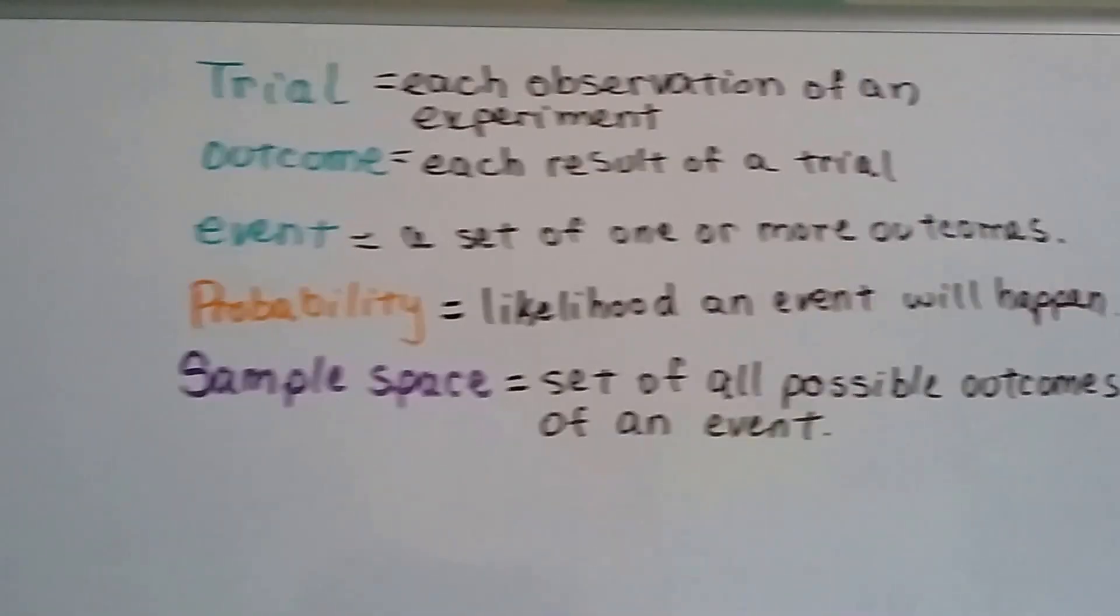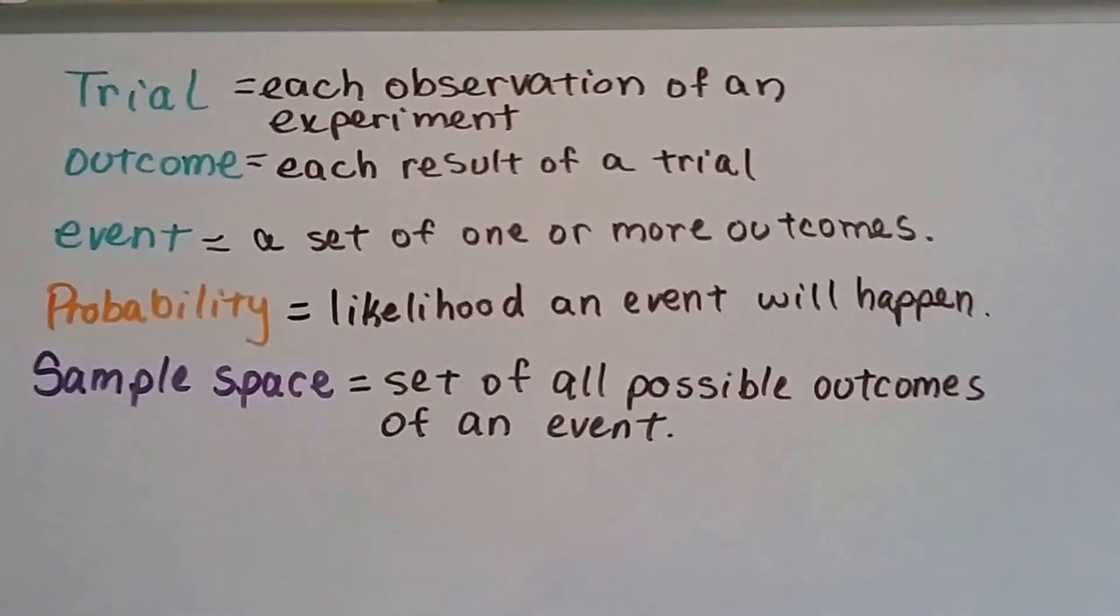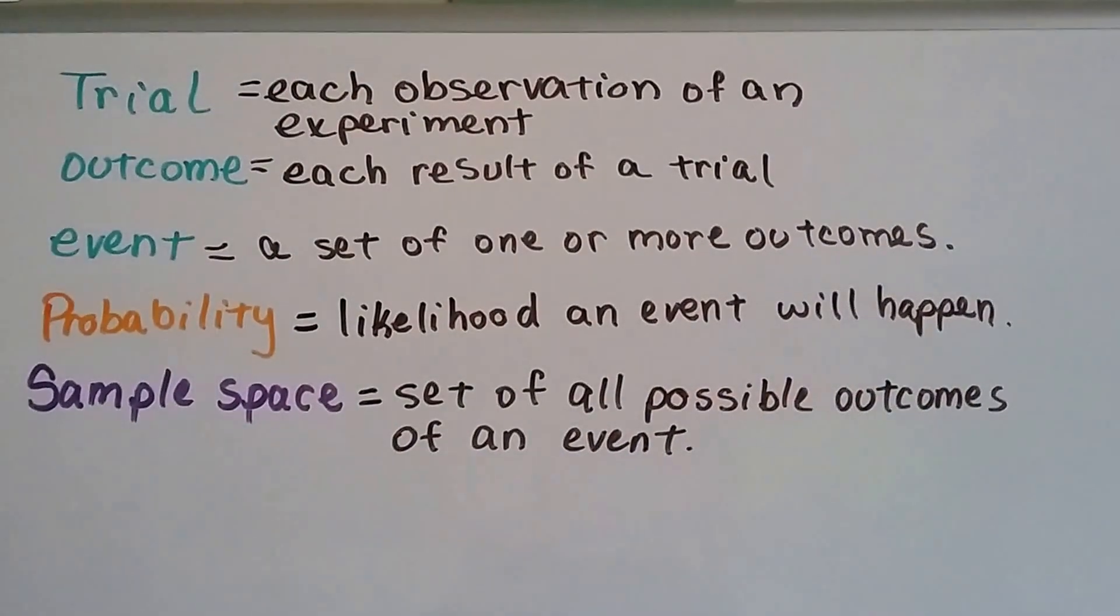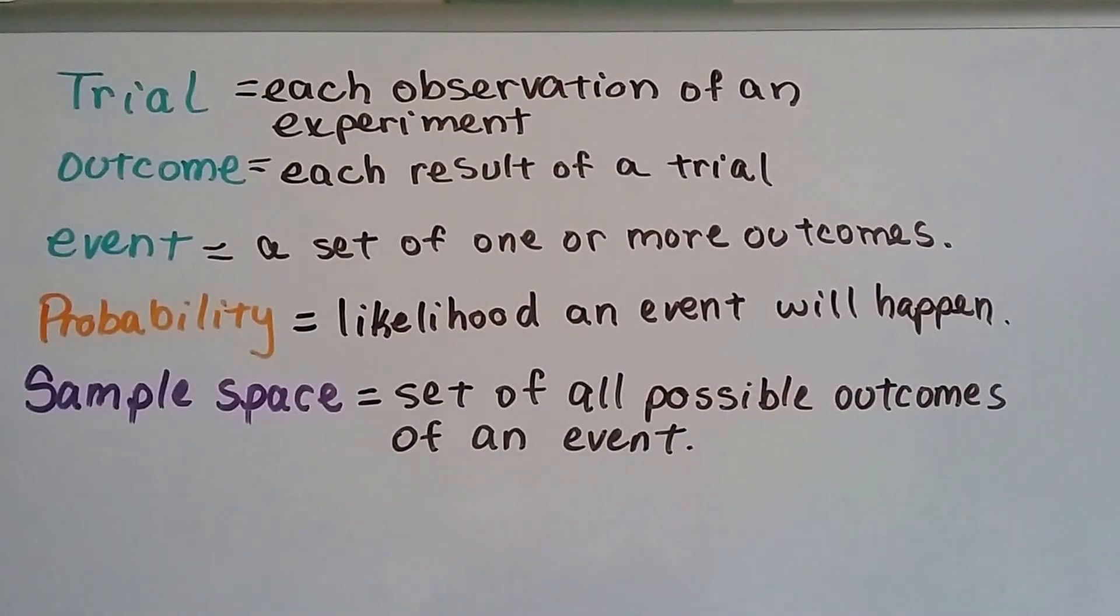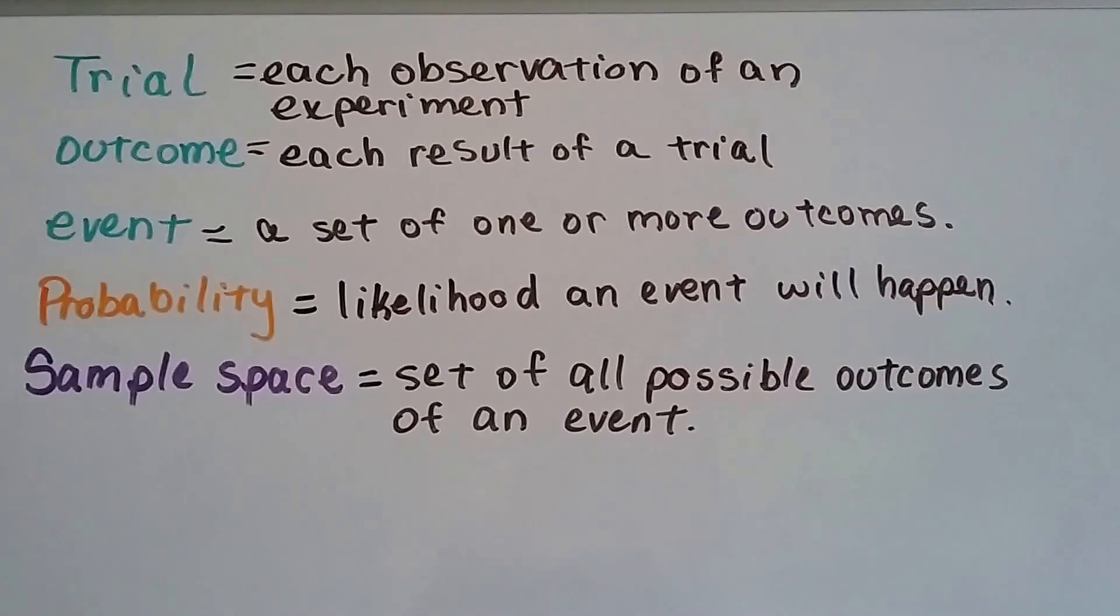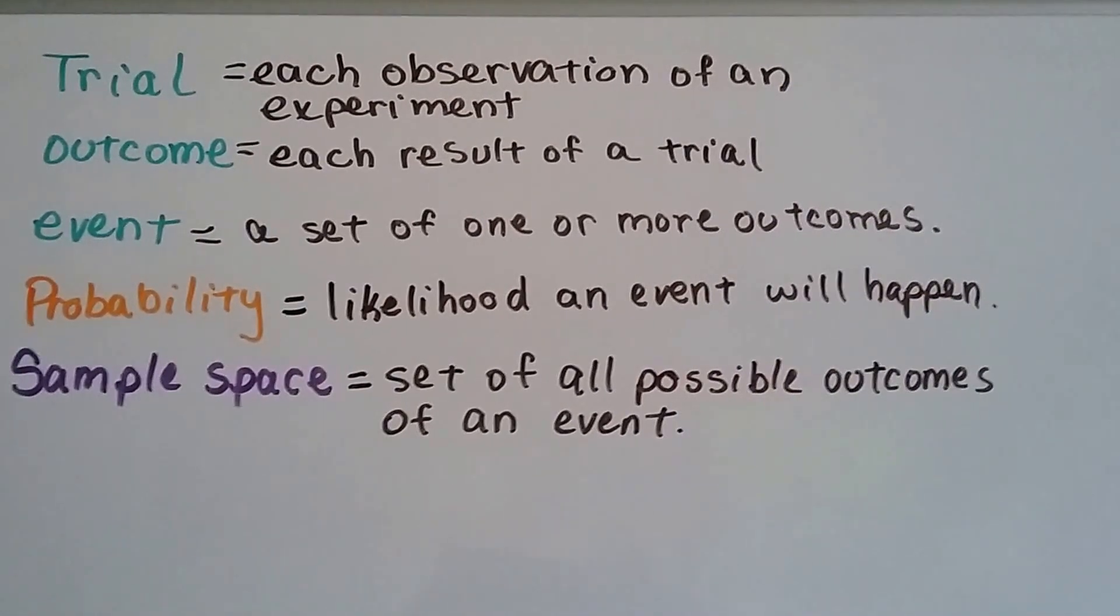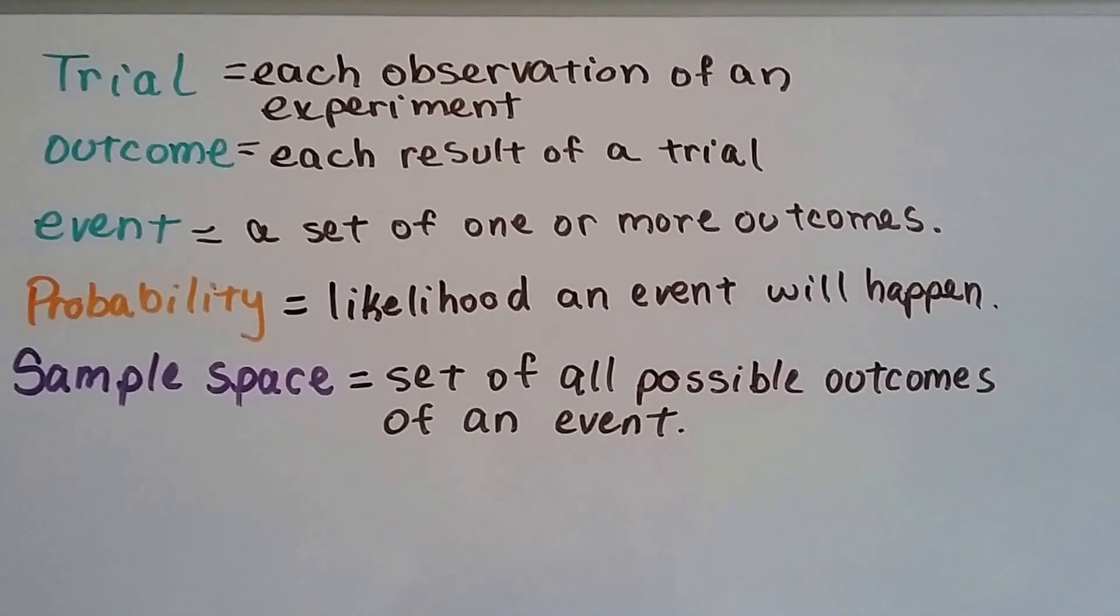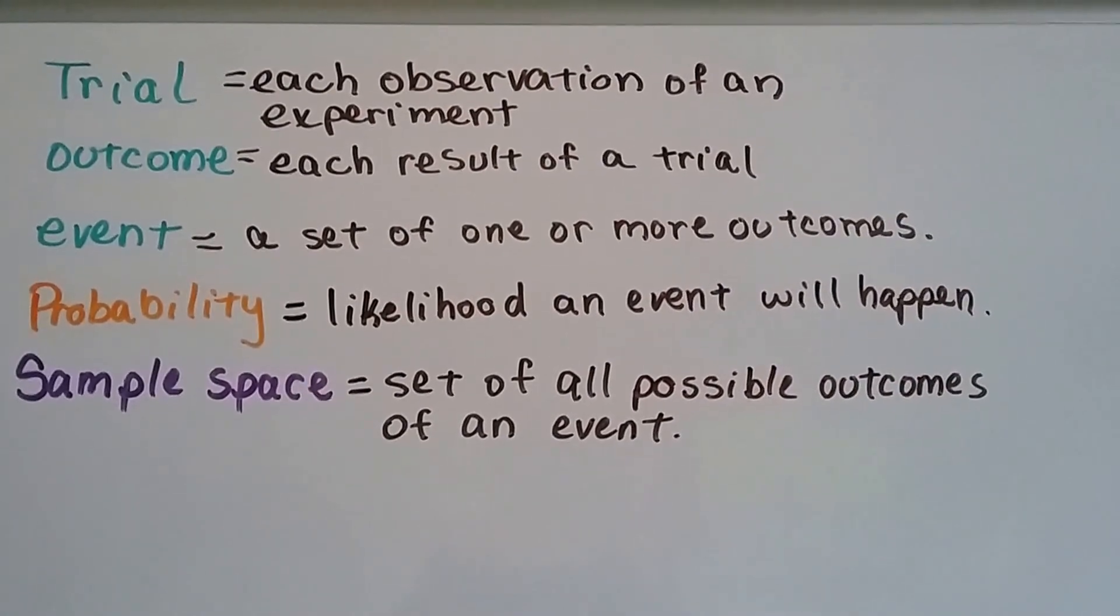In the last couple of videos for 12.1a and b, we learned that a trial is each observation of an experiment, an outcome is each result of a trial, an event is a set of one or more outcomes, probability is the likelihood an event will happen, and a sample space is a set of all possible outcomes of an event.